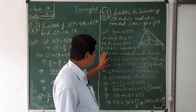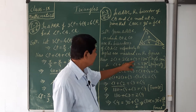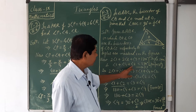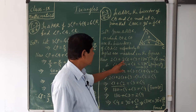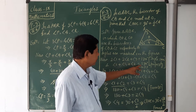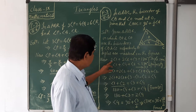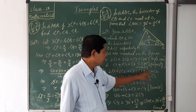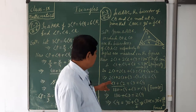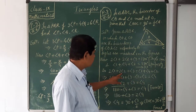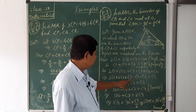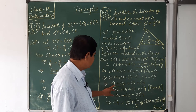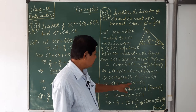From these two equations, both are equal to 180°, so equate the left-hand sides. Therefore: 2∠1 + 2∠2 + ∠3 = ∠1 + ∠4 + ∠2. Transposing ∠1 and ∠2 to the left: 2∠1 − ∠1 + 2∠2 − ∠2 + ∠3 = ∠4. So ∠1 + ∠2 + ∠3 = ∠4.